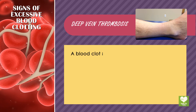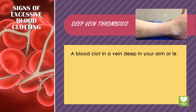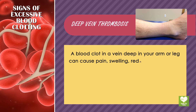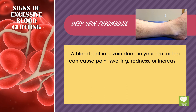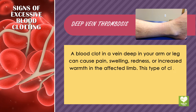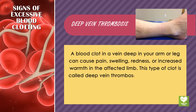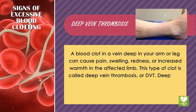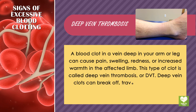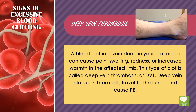Deep Vein Thrombosis. A blood clot in a vein deep in your arm or leg can cause pain, swelling, redness, or increased warmth in the affected limb. This type of clot is called Deep Vein Thrombosis, or DVT. Deep vein clots can break off and travel to the lungs.